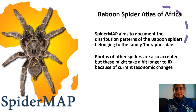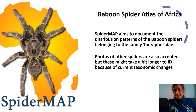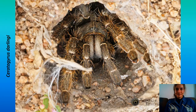The Baboon Spider Atlas of Africa aims to document the distribution patterns of the baboon spiders, belonging to the family Theraphosidae. We also don't just accept photos of baboon spiders — you can submit photos of any type of spider. The IDs on these might take a bit longer since the taxonomy is constantly changing, so we're updating the species list as we speak. Any photos of any spiders are welcome. Here's a lovely example of the golden brown baboon spider, also by Eugene Trosky.